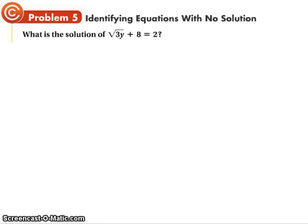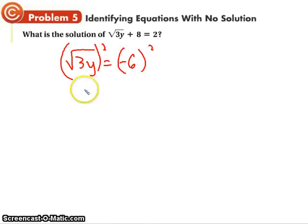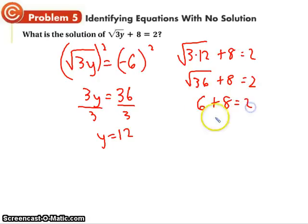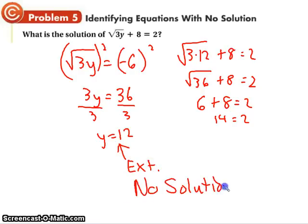Okay, in some cases, none of the answers are actually true. So get the number by itself, move that over. Square both sides. Divide by three. I get y equals twelve. So we check. Three times twelve plus eight equals two. That's the square of thirty-six plus eight, plus eight. That's six plus eight equals two. Fourteen equals two. This is an extraneous, so there is no solution to this problem.